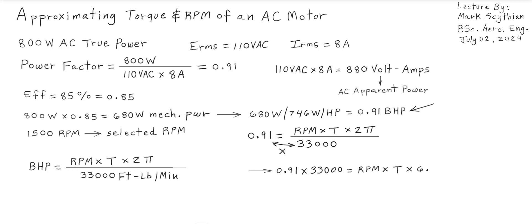We can replace 2π with 6.28, and then solve: 0.91 times 33,000 equals RPM times T. So we have to divide both sides by RPM times 6.28. This then gives us 4781.8 equals RPM times T.